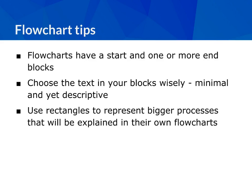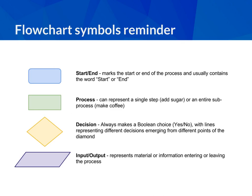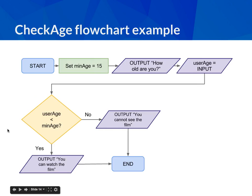Choose text in your blocks wisely — make them descriptive but minimal. Use rectangles to represent the bigger processes that you'll go on to explain in their own flowcharts later. As a reminder of symbols: rounded rectangles (sausage shapes) are for start and end; plain rectangles for processes; diamonds for decisions with two exit branches (yes and no); and parallelograms for inputs and outputs. In an example flowchart: start, set a variable, output to user, accept input, test a condition, get yes or no, produce two different outputs, and both lead to an end.